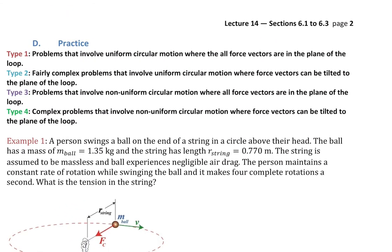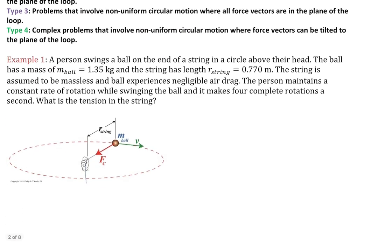There are four problem types: Type 1 involves uniform circular motion where all force vectors are in the plane of the loop — the simpler 2D case. Type 2 is uniform circular motion where force vectors can be tilted to the plane, requiring components. Type 3 is non-uniform circular motion with all force vectors in the plane of the loop. Type 4 is non-uniform with tilted forces.